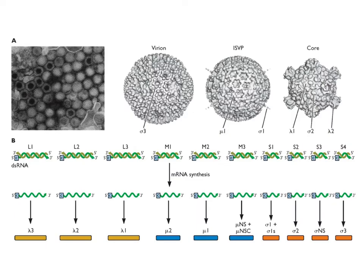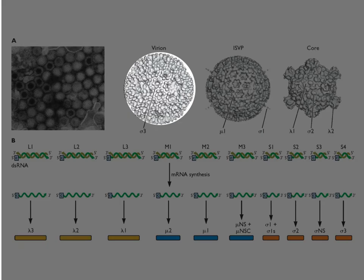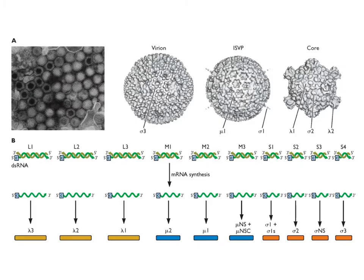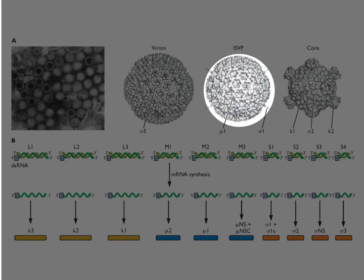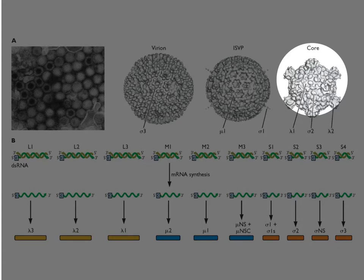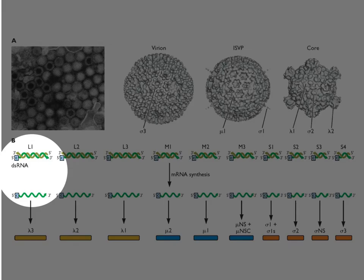These are what these viruses look like. They're spherical and they have two shells — two concentric icosahedral shells. Here's the intact virion. As these viruses move through the endocytic pathway, the outer shell gets digested away, so you're left with a core. And it's within this core that mRNA synthesis actually occurs. Here you can see the double-stranded genome RNAs of these viruses all packed into this core.